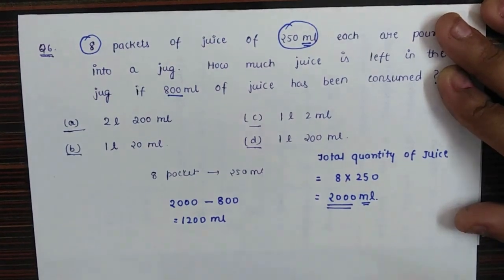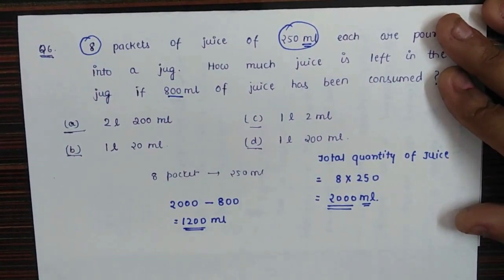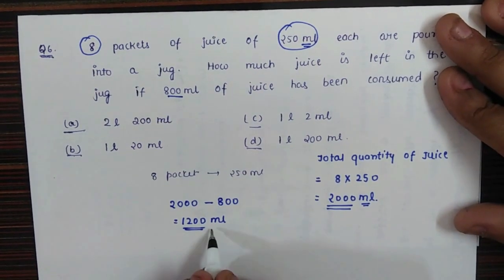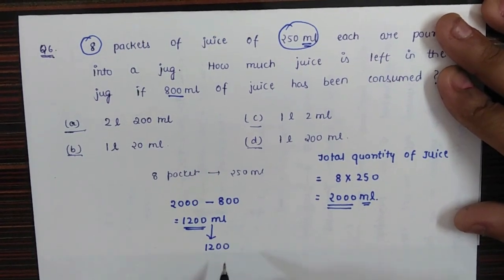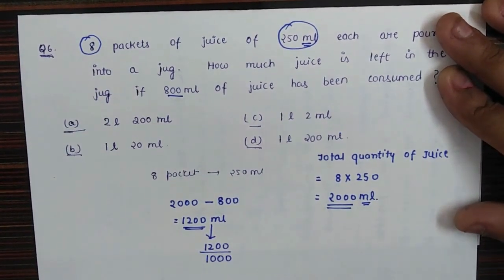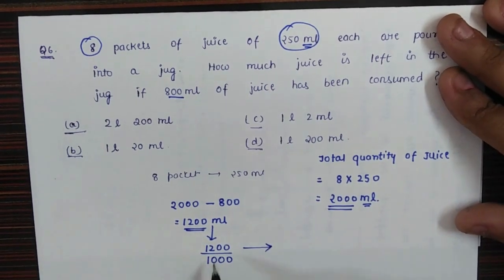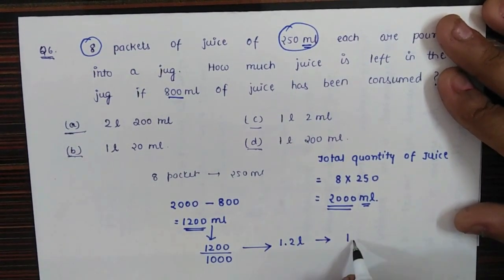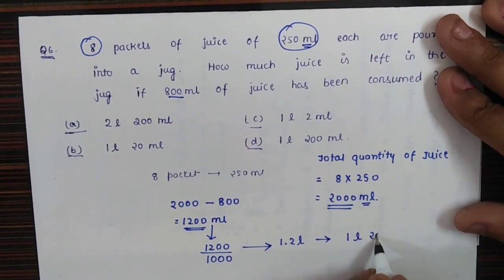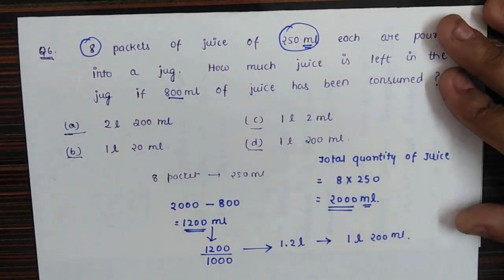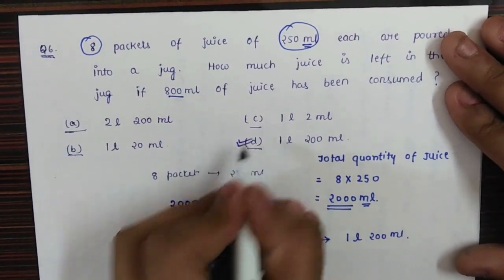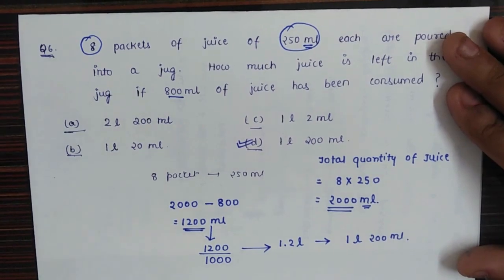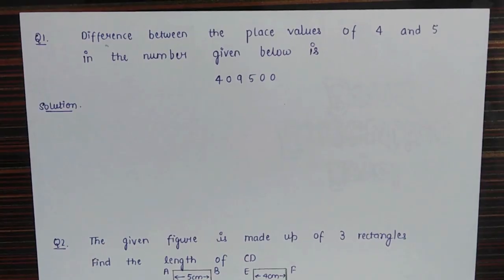We have 1200 milliliters of juice remaining. We can convert this into liters by dividing by 1000, since one liter equals 1000 milliliters, giving us 1.2 liters, or equivalently 1 liter and 200 milliliters. This is how the question was supposed to be solved, and the right option was option D.